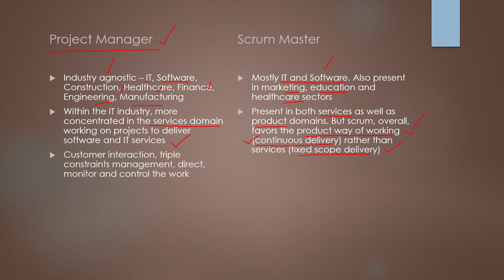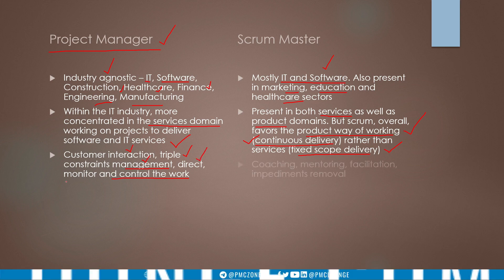As a project manager, your responsibilities include customer interaction, triple constraints management — which basically means cost, scope, and schedule — and to direct, monitor, and control the work. A project manager is supposed to interact with the customer, manage the triple constraints, direct the project team, and monitor and control the work.